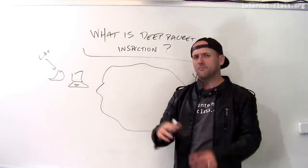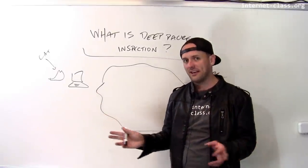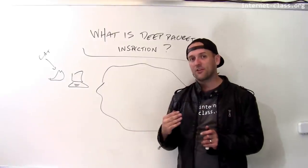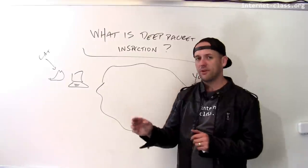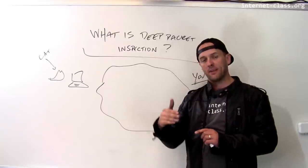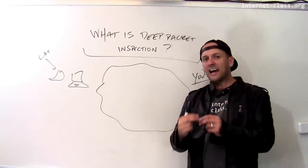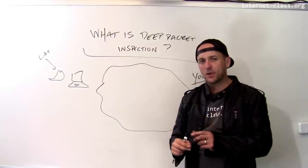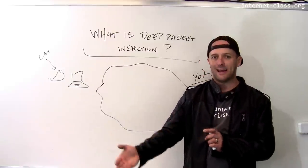Unfortunately, or depending on your point of view, fortunately, routers can be configured to do more than this, and this is sometimes known as deep packet inspection or DPI. What that means is having a router not just look at the destination address, but look at other things in the packet.